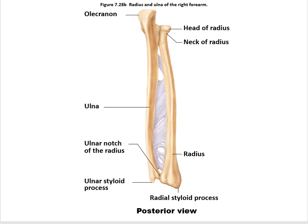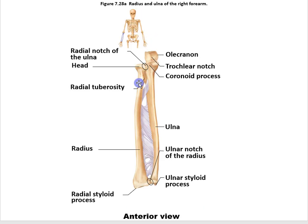The other part we need to know is the radial tuberosity. A tuberosity is a bump — broader and more hill-like than a tubercle, maybe not quite as clearly defined. The radial tuberosity is the attachment point for the biceps muscle.